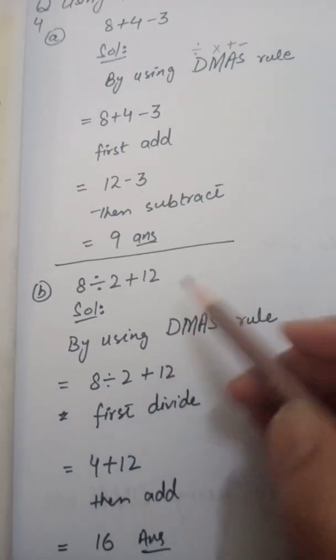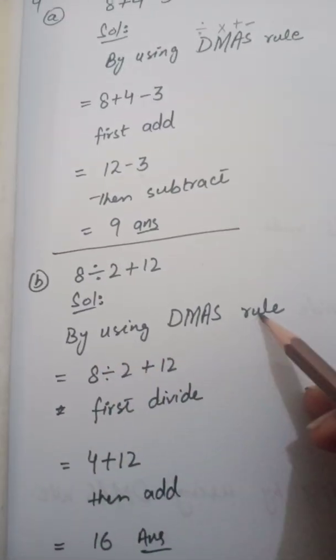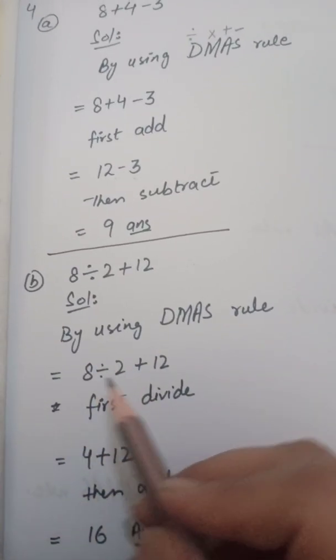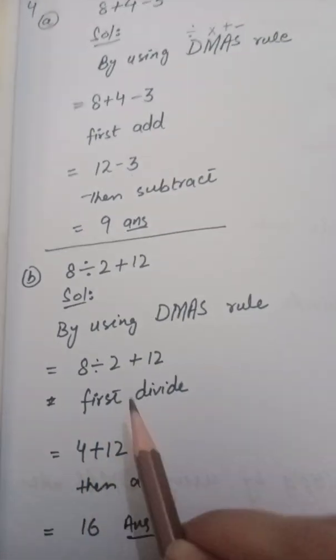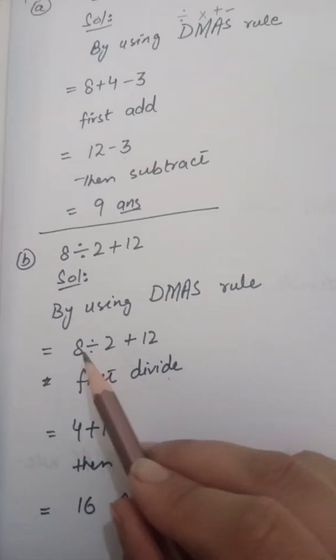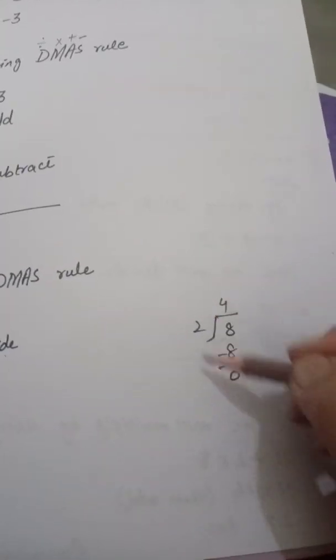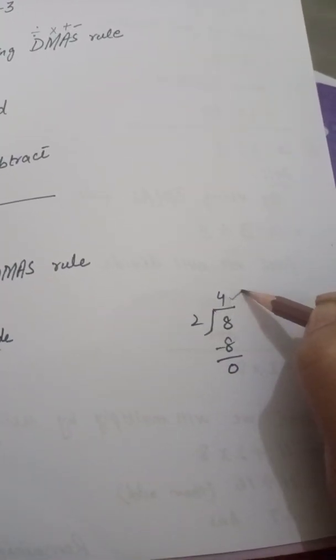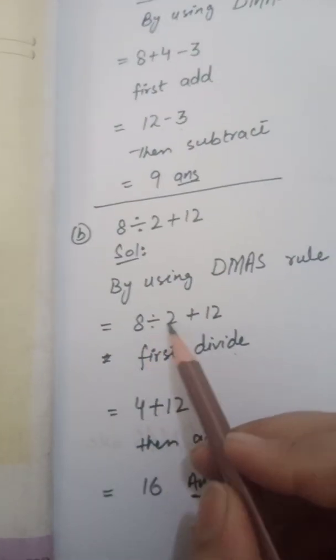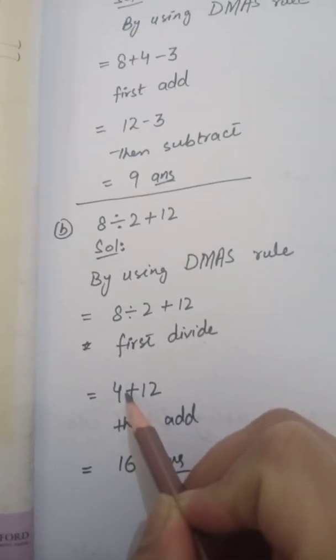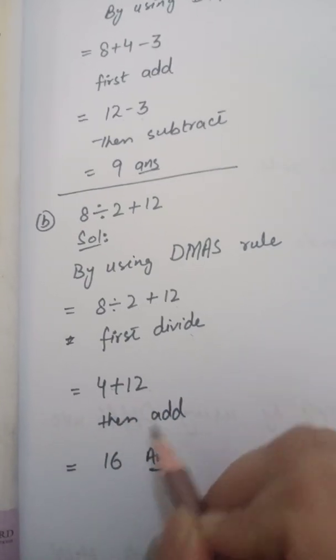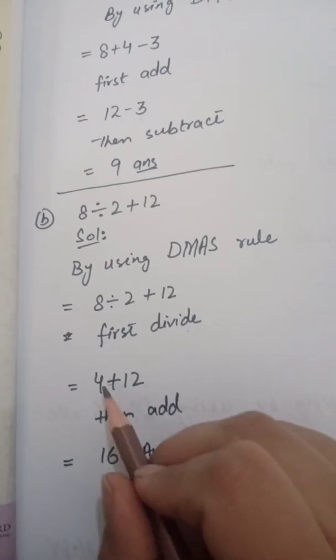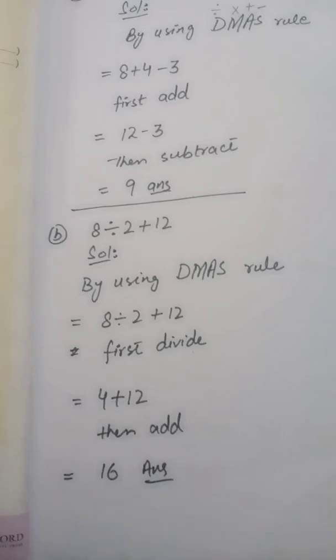Part number B, 8 divided by 2 plus 12. So similarly you will write by using DMAS rule. 8 divided by 2, you with equality sign, you have to rewrite the question. First we will divide. 8 you will divide by 2, then what will be your answer? That means 4 will come. Okay, so in place of 8 divided by 4, what will you write here? In place of 8 divided by 2, you will write 4, plus 12 as it is. Then now what will we do? We will add, 4 plus 12. What will come? 16 will come. Okay students.